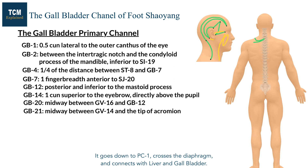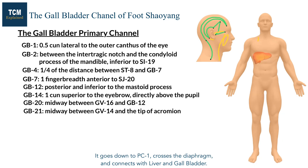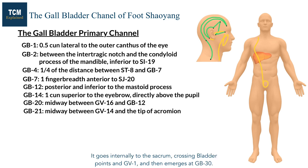It goes down to Pericardium 1, crosses the diaphragm, and connects with the liver and gallbladder. It comes out at the inguinal region and encircles the genitals. It goes internally to the sacrum, crossing bladder points and GB1, and then emerges at GB30.